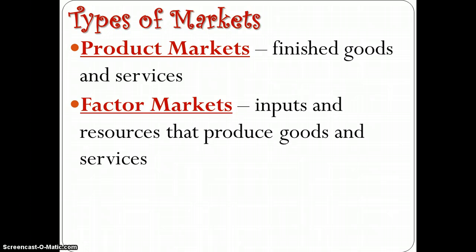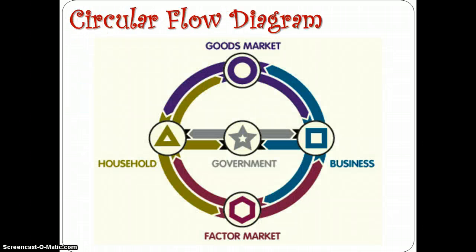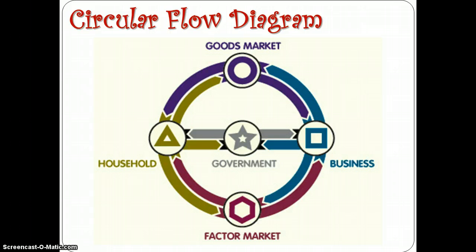The factor markets are part of the circular flow diagram that we looked at at the beginning of the year. The goods market is the one that we're most comfortable with — where the suppliers are those who make things and the demand is the consumer. But in the factor market, everything is kind of flipped backwards and reversed. The people demanding the factors of production are the businesses, the producers, and the suppliers of those factors of production are assumed to be the households.